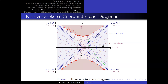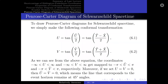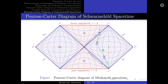For a better visualization, one can perform a conformal transformation to map the Kruskal-Szekeres diagram to a finite range. To do so, we draw the Penrose-Carter diagram for Schwarzschild spacetime by making the following conformal transformation. As we can see from the equation, the coordinates capital U and capital V range from minus infinity to infinity and get mapped onto capital Ũ and capital Ṽ ranging from minus π to π respectively. Moreover, if we set capital U equals capital V equals 0, then capital Ũ equals capital Ṽ equals 0, which means the lines corresponding to the event horizons remain at 45-degree angles to the new capital X̃ and capital T̃ axes.